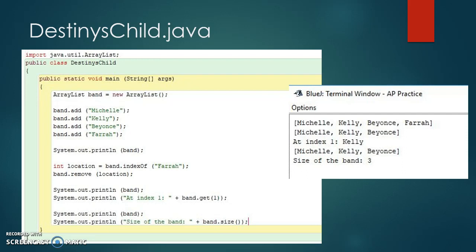The Destiny's Child program shown here instantiates an ArrayList called Band. The method Add is used to add several string objects to the ArrayList in a particular order. Then one string is deleted and another is inserted at a particular index. As with any other object, the toString method of the ArrayList class is automatically called when it is sent to the PrintLine method. Note that when an element from an ArrayList is deleted, the rest of the elements collapse so that there are no holes in the list.